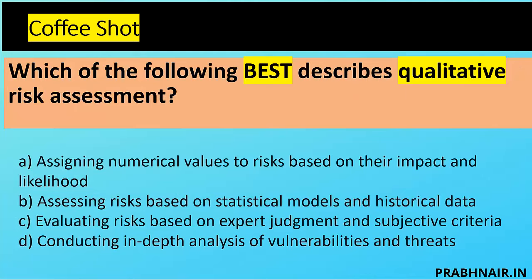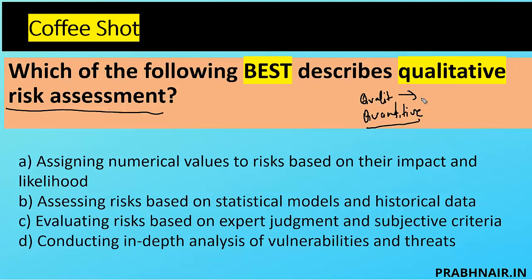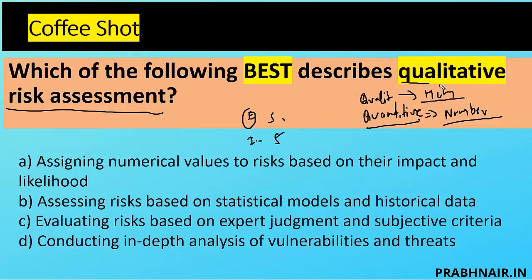Question three: which of the following best describes qualitative risk assessment? There are two types: qualitative and quantitative. In qualitative, we map risk level based on high, low, and medium. In quantitative, we use numbers. For example, earthquake occurrence five times a year with an impact of five gives a numeric score of 5×5=25. The question asks about qualitative specifically.